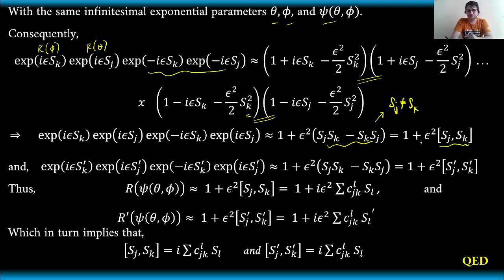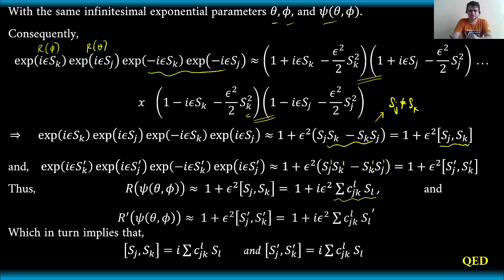The same holds for the primed ones — we just have to indicate they are primed — giving us 1 plus epsilon squared times the commutator [Sj prime, Sk prime]. These are represented by the R functional or rotation matrices: R as a function of psi (which is a function of theta and phi) is approximately equal to 1 plus epsilon squared times the commutator of Sj and Sk, and this can be expressed in terms of a summation.